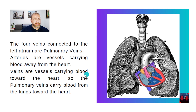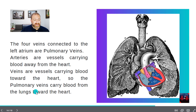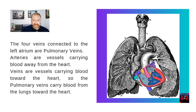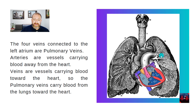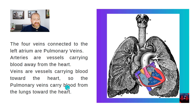Veins are vessels carrying blood toward the heart. So the pulmonary veins carry blood from the lungs toward the heart — four veins connected to the left atrium. And remember, arteries are vessels carrying blood out of the heart.